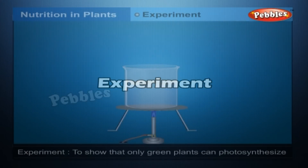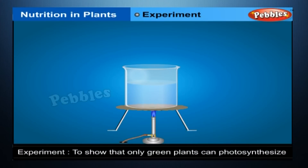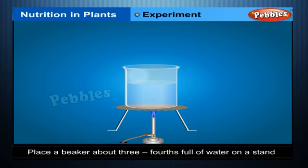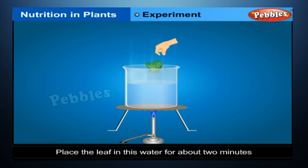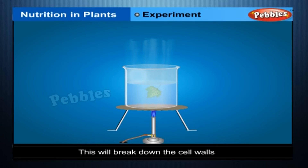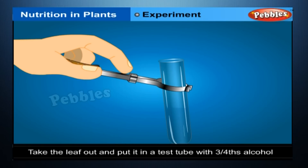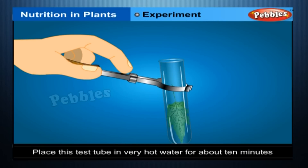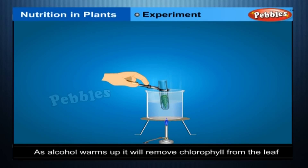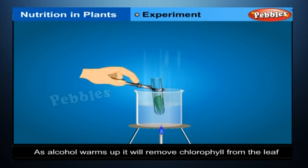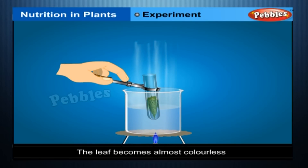Experiment: To show that only green plants can photosynthesize, place a beaker about three-fourths full of water on a stand and boil the water. Place the leaf in this water for about two minutes — this will break down the cell walls. Take the leaf out and put it in a test tube with three-fourths alcohol. Place this test tube in very hot water for about ten minutes.